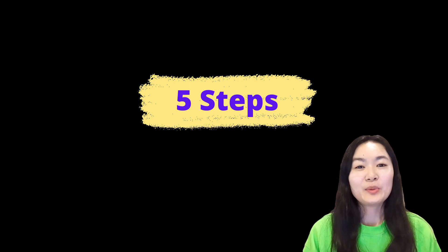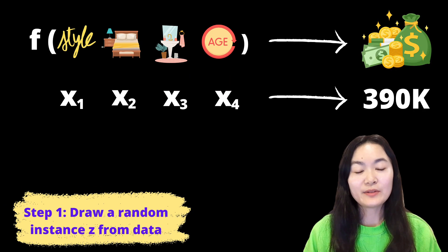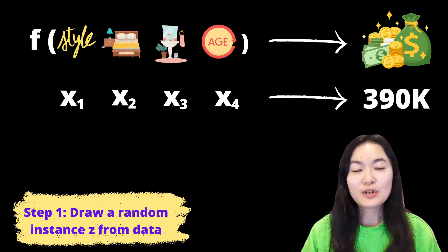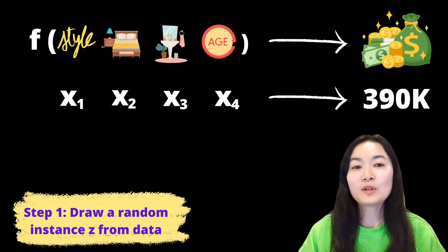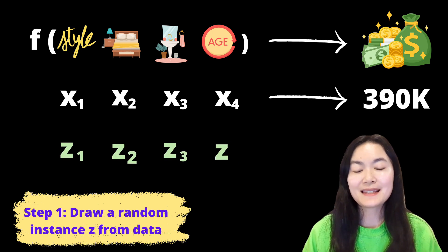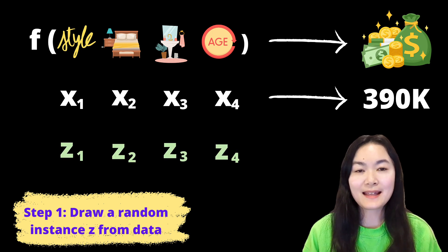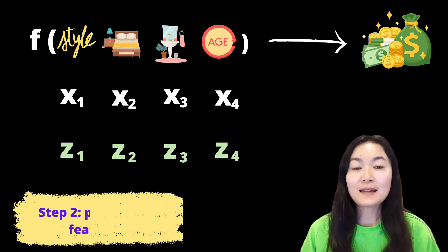Step 1: we draw a random sample z from our data. With 4 features, we get our 4 data points: z1, z2, z3, and z4.